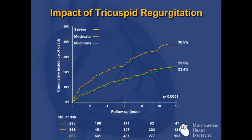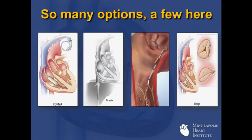Here's an example of the impact of TR in a patient population. These data are from the TVT registry published this year — the mitral clip registry of 3,000 patients. In that population, 15% had TR, and for those patients whose TR was left untreated, survival was much worse than patients without TR. It's imperative that those of us who are catheter-based or surgical-based have ways of addressing TR in our patient population.